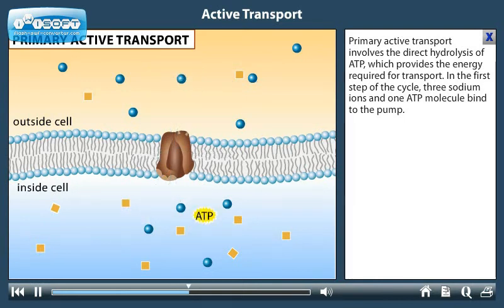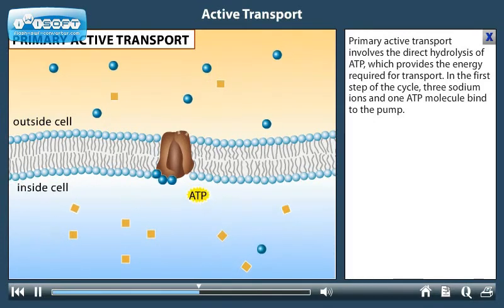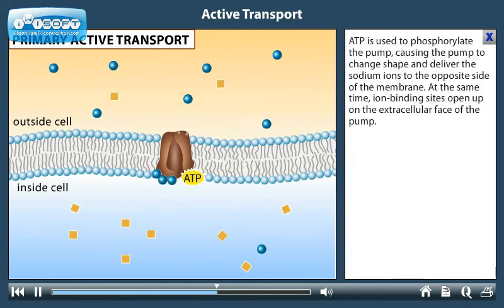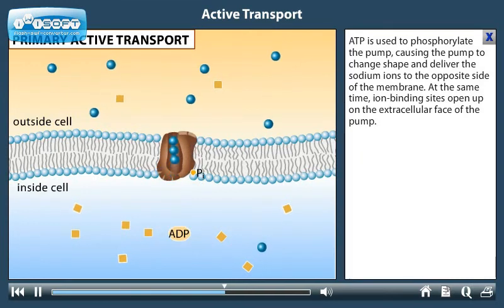Primary active transport involves the direct hydrolysis of ATP, which provides the energy required for transport. In the first step of the cycle, three sodium ions and one ATP molecule bind to the pump. ATP is used to phosphorylate the pump, causing the pump to change shape and deliver the sodium ions to the opposite side of the membrane.